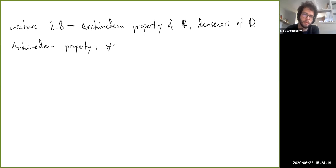For all A and B greater than 0 in R, there's some natural number such that NA is greater than B. So it seems obvious, but you actually need to invoke completeness.